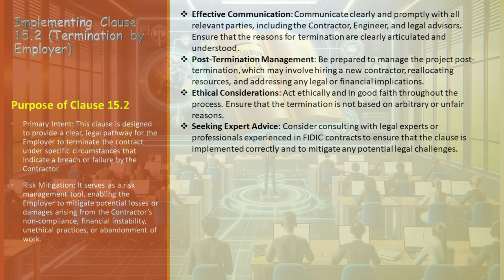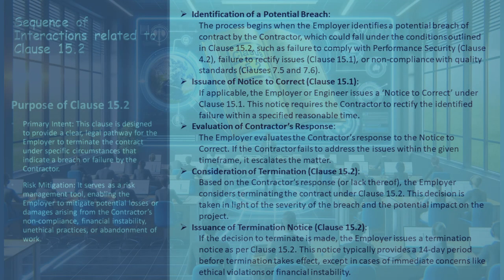To fully understand the application of Clause 15.2 in the FIDIC Yellow Book, it's essential to detail the sequence of interactions that typically occur when this clause is invoked. The process initiates when the employer identifies a potential breach of contract by the contractor. This breach could be related to non-compliance with performance security (Clause 4.2), failure to rectify issues (Clause 15.1), or non-adherence to quality standards (Clauses 7.5 and 7.6). If applicable, the employer or engineer issues a notice to correct as per Clause 15.1, demanding the contractor to remedy the identified failure within a set reasonable period.